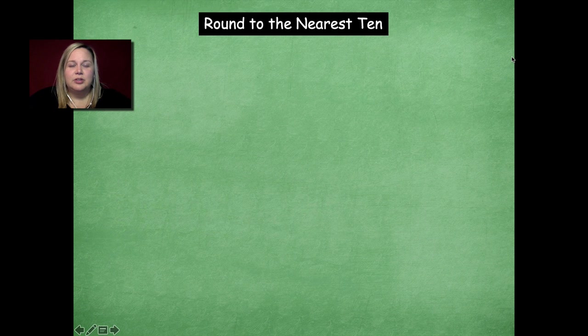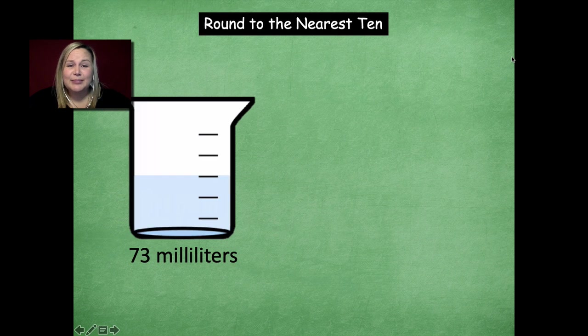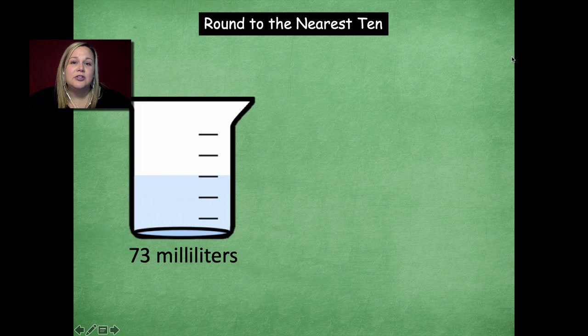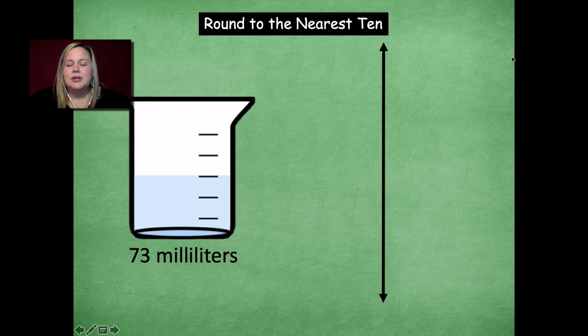So we're going to start with rounding to the nearest 10. Here is a picture of a beaker that has 73 milliliters of water in it. In order for us to be able to round this number to the nearest 10, we're going to have to be looking at our vertical number line. So here's our vertical number line. We're going to label the two endpoints, so like a starting point and a stopping point.